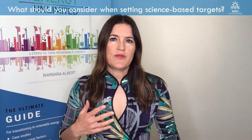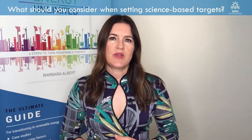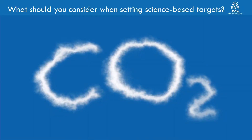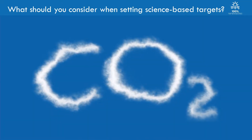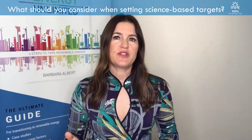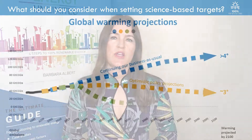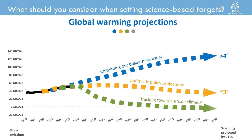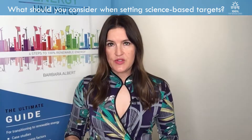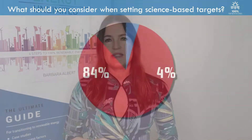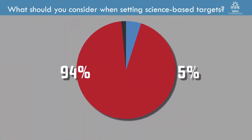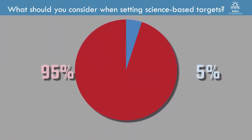The boundaries of your SBT should align with those of your carbon inventory. Your emissions reductions from scope 1 and scope 2 sources should be aligned with a 1.5 degrees Celsius decarbonisation pathway. SBTs should cover at least 95% of your scope 1 and scope 2 emissions.